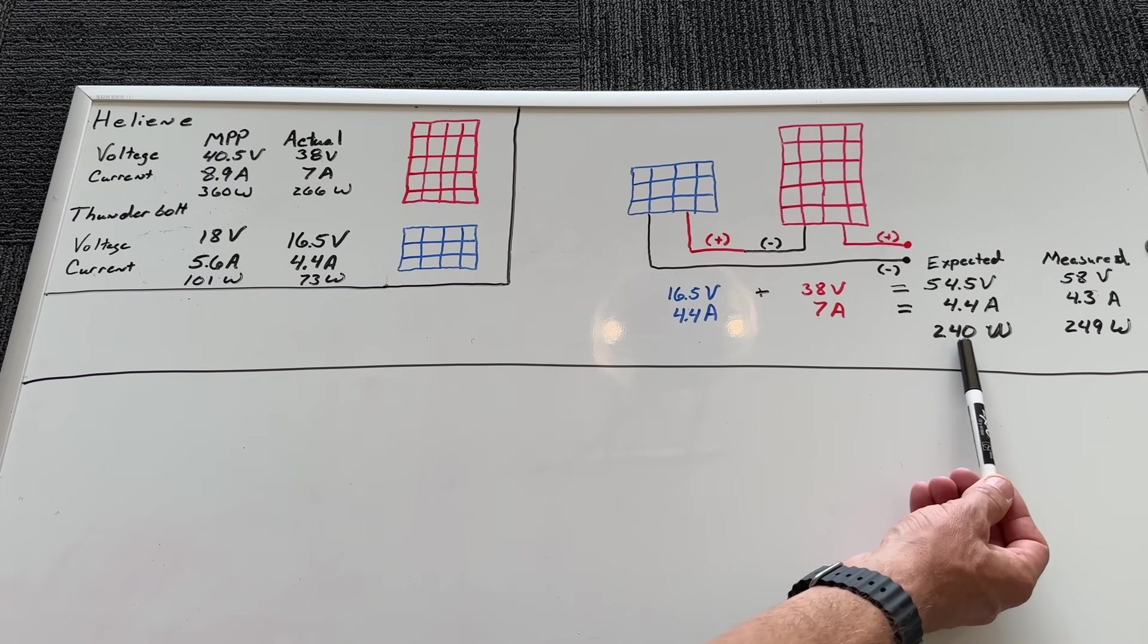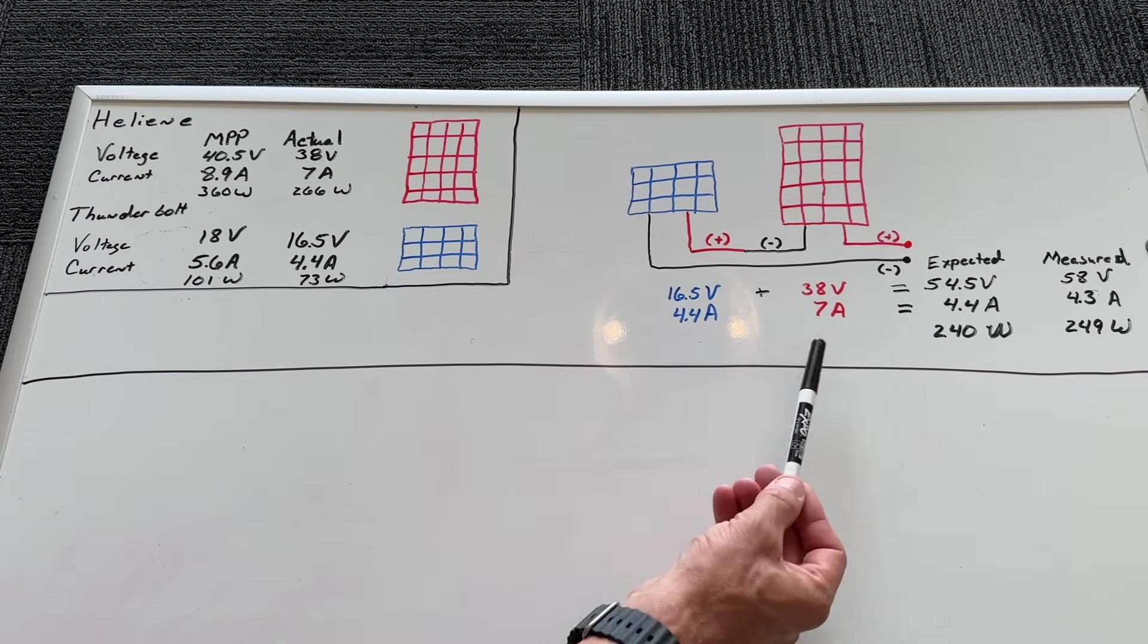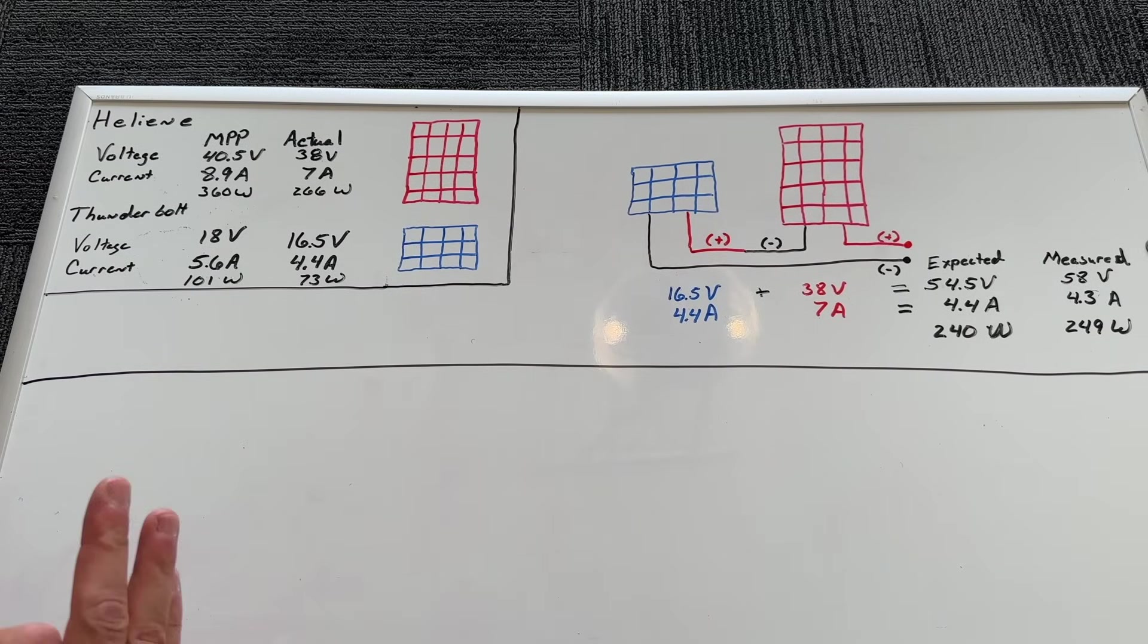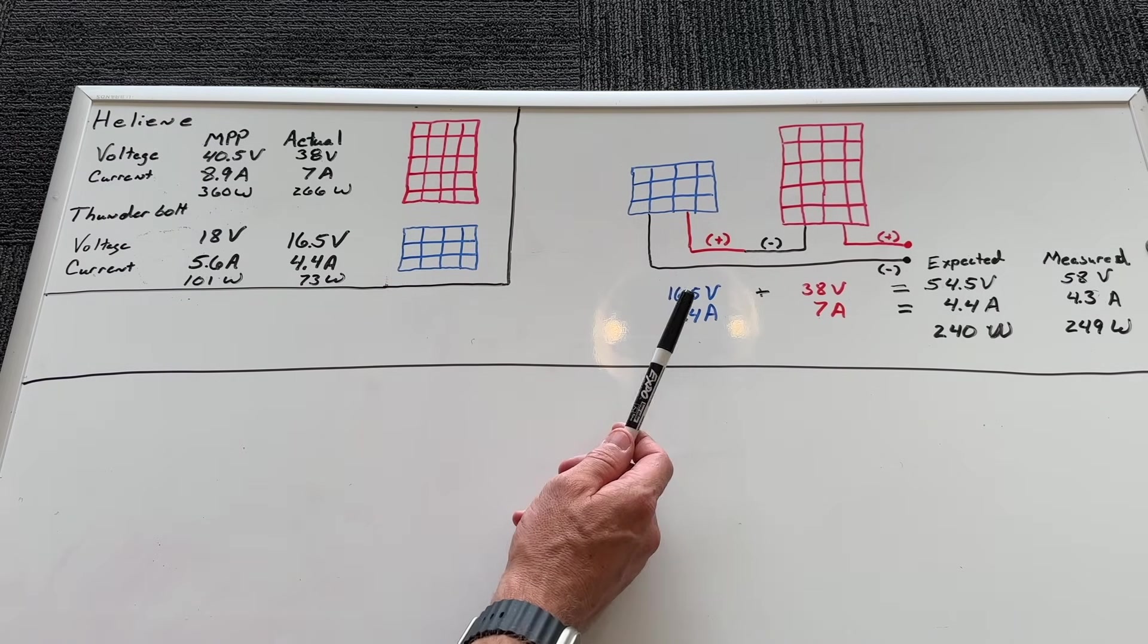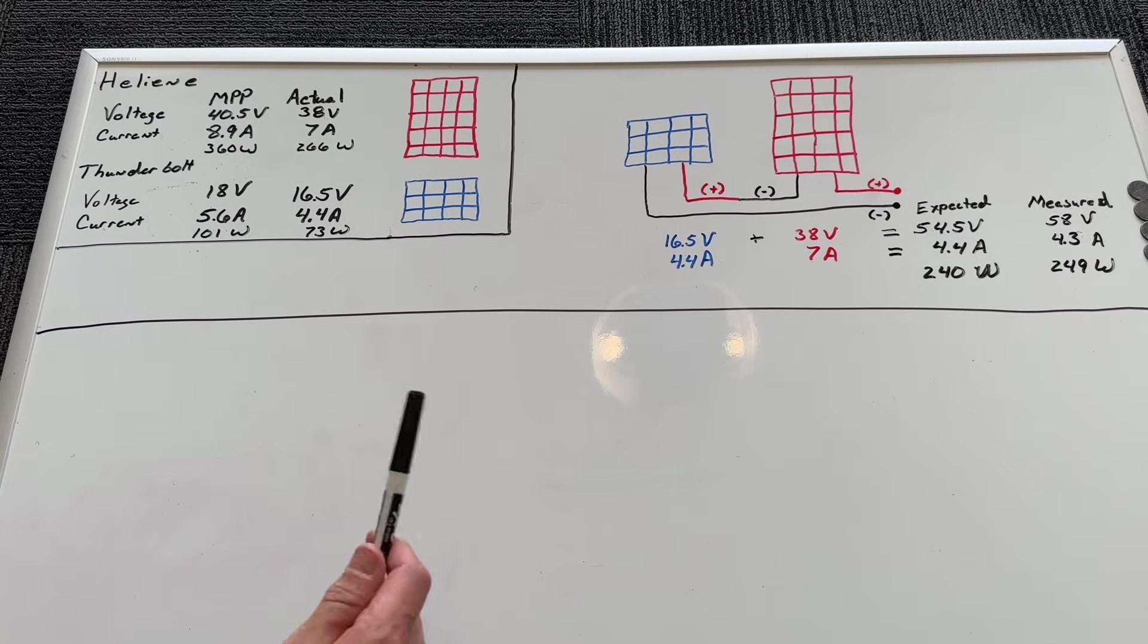If we multiplied voltage times current to get our expected power, that is 240 watts. So we are actually expecting this if you understand how this works when wiring in series mismatched panels. This is why wiring in series mismatched panels might be a very bad decision. But the question is, what is a better way?